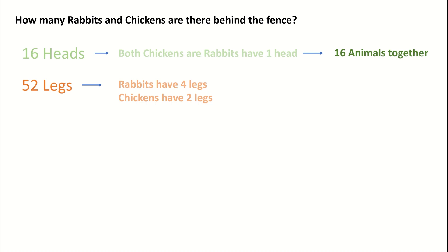We also know that rabbits have four legs and chickens have two legs. So with these three pieces of information, we could start solving this problem without algebra. If you're looking for a solution with algebra, please check out our other video. Let's get started to solve this problem using a table — we'll draw a table with three columns: a column for chicken, a column for rabbit, and a column for legs.